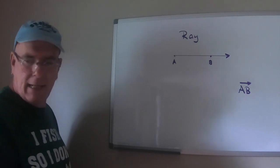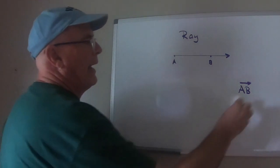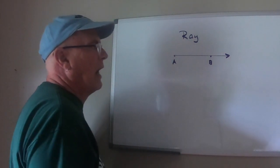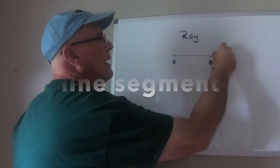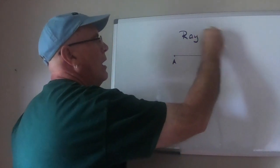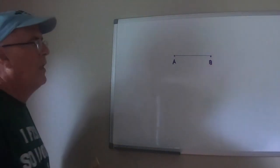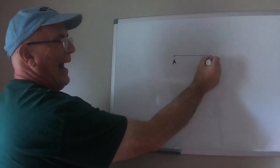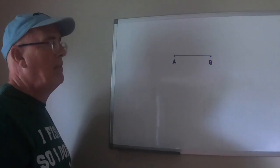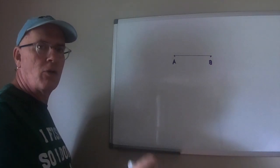Now the next thing to talk about is part of a line which is called a line segment and the word segment means part. So it's part of the line. It has a beginning point and an ending point that can be measured. That's a one-dimensional direction that you can measure.